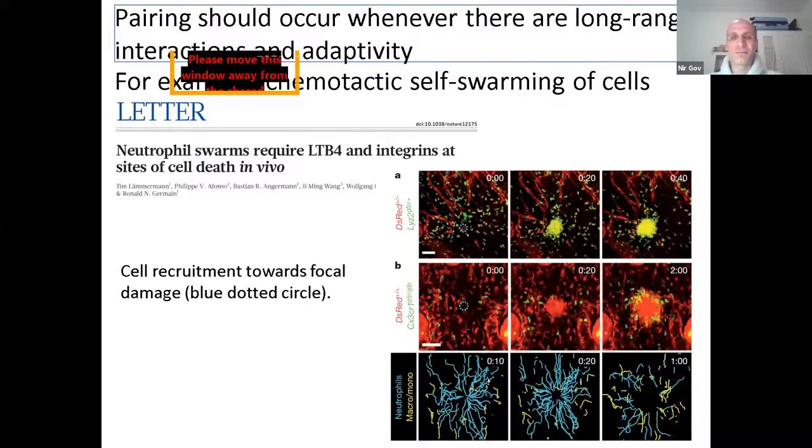Yeah, I would just say that maybe adaptive long-range interactions can appear in other regimes, like for example, in swarming of single cells to a wound, and maybe also there you get these transient pairing. I don't know, but the same rules should apply to other systems and not only to midges. And yeah, and thank you.